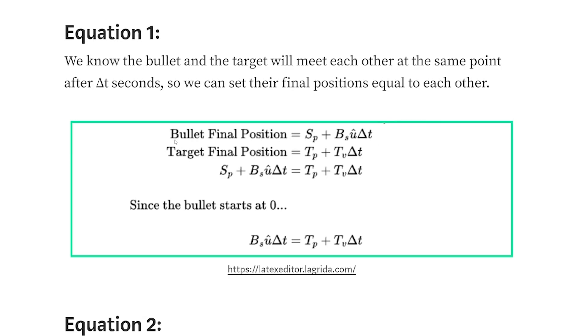For the bullet, it's going to start at the shooter. It's going to have a speed times a direction times time. Now the speed and the direction combined make velocity, but because we only know one part of it, that's why we're splitting them up here. But for the target, since we know the velocity, we can just use target's velocity.